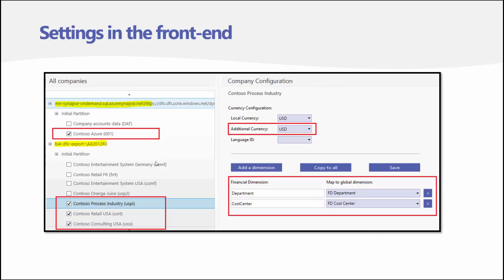The settings cover everything needed to facilitate merging cloud and on-premise data. Here we select a cloud source — Contoso Azure as the company — and the on-premise database hosted on the same virtual machine in a database called AX 2012 R3. That is the name of the database.